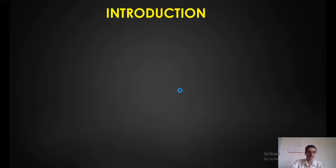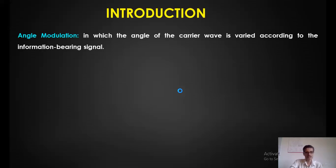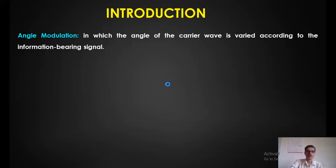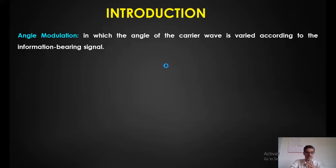Let us start with the definition of angle modulation. It is a process in which the angle of the carrier is changed according to the amplitude of the message signal — the information-bearing signal. So we vary the angle of the carrier proportionally to the amplitude variation of the message signal.